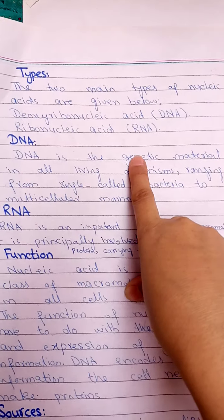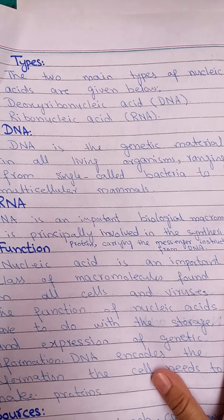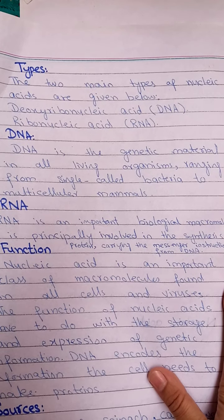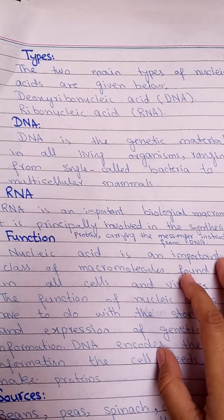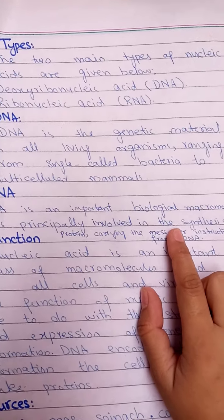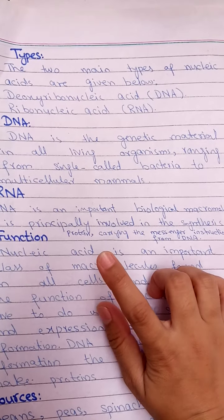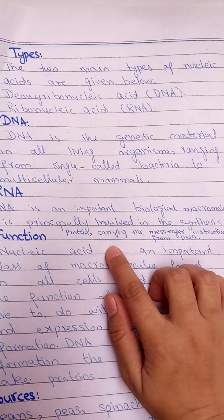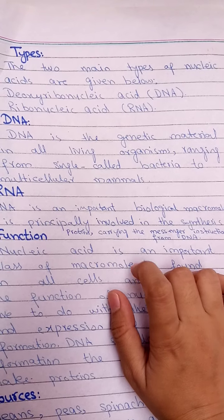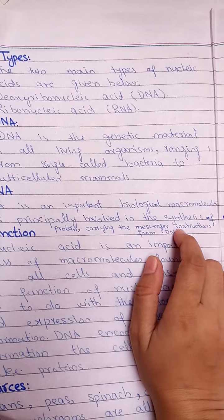DNA is the genetic material in all living organisms, whether a single-celled bacterium or a multicellular mammal. RNA is an important biological macromolecule principally involved in protein synthesis — specifically, it carries messenger instructions from DNA.